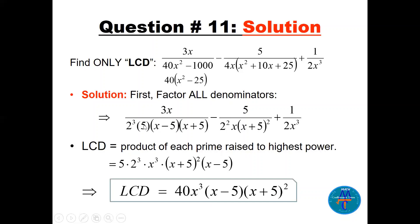Also factor 40 as 2³ × 5, and 4x as 2² × x. Now collect all prime factors at their highest powers: take 2³ (highest power of 2), x³ (highest power of x), (x + 5)² (highest power of that factor), and (x − 5)¹. Multiply all together: LCD = 40x³(x − 5)(x + 5)². This is the least common denominator you use when adding or subtracting these fractions.